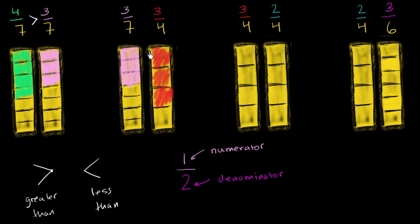And so it's pretty clear that 3 fourths represents a larger fraction of the whole. That 3 fourths is larger or that 3 sevenths is smaller. So we could write that 3 sevenths is less than 3 fourths. So notice, same exact numerator.